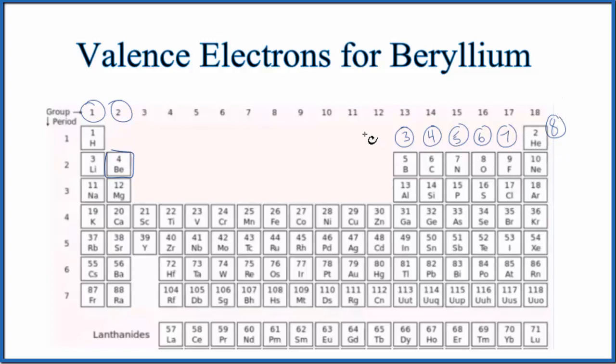We could also write the electron configuration to determine how many electrons there are in the highest energy level of beryllium. That would be the valence shell. So for beryllium,